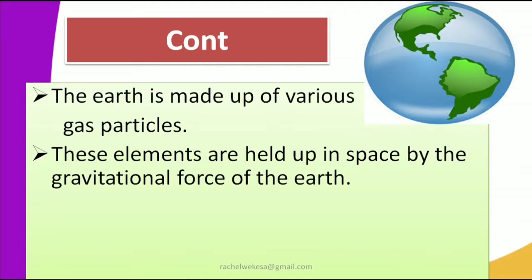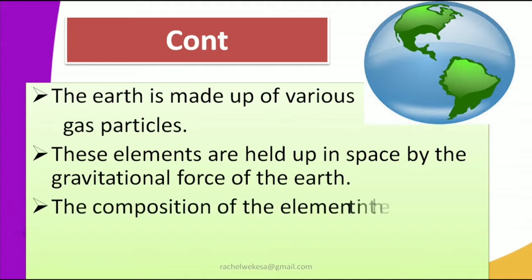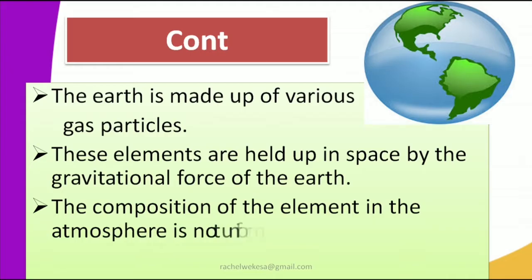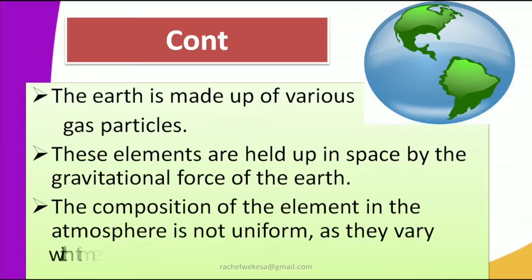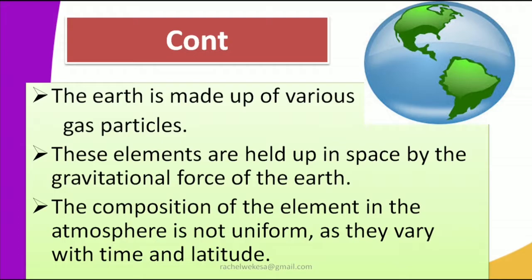Let's look at the various gases and compositions that we have. The composition of elements in the atmosphere is not uniform; they also vary with time and latitude. What the atmosphere is made of is not uniform — in some places it can be too much, in others too little, and in others moderate.